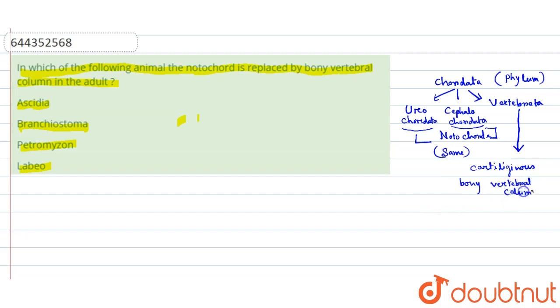Now we will see that among these four animals, which are in which phylum or which subphylum group. The first one is Ascidia. It is a Urochordata subphylum, so all these animals are in the Chordata group only, but Ascidia is the Urochordata subphylum, so here notochord remains the same in their body.